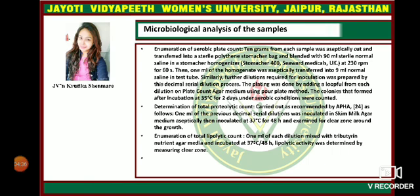Determination of total proteolytic count was carried out as recommended by the APHA. 1 ml of the decimal serial dilution was inoculated in skim milk agar medium aseptically, then incubated at 37°C for 48 hours and examined for a clear zone around the growth. Enumeration of total lipolytic count: 1 ml of each dilution was mixed with tributyrin nutrient agar medium and incubated at 37°C. Lipolytic activity was determined by measuring the clear zone.